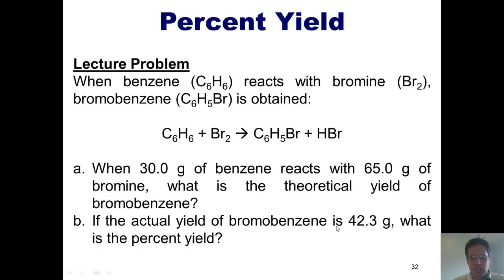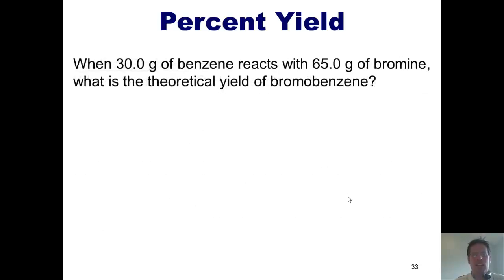And part B, if the actual yield is 42.3 grams, what's the percent yield? We'll go ahead and tackle this together. Once again, the first thing we need to do is balance the chemical equation. Already done. Now we convert everything we're given into moles.